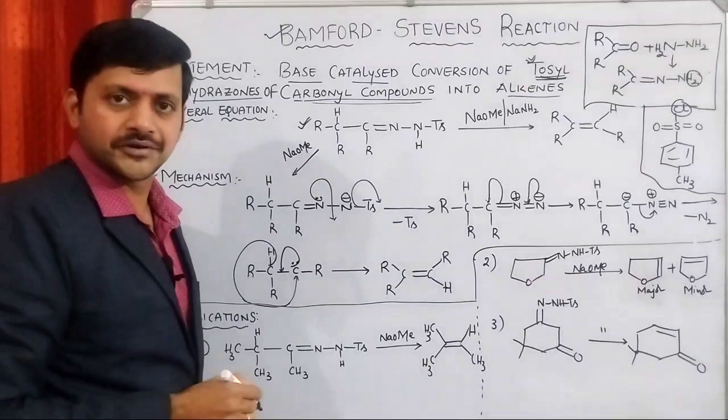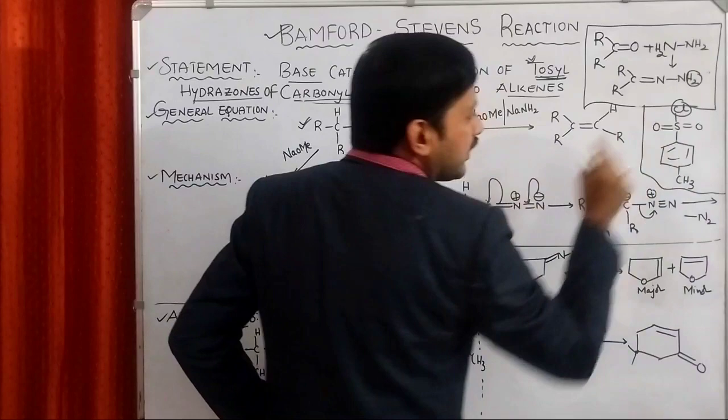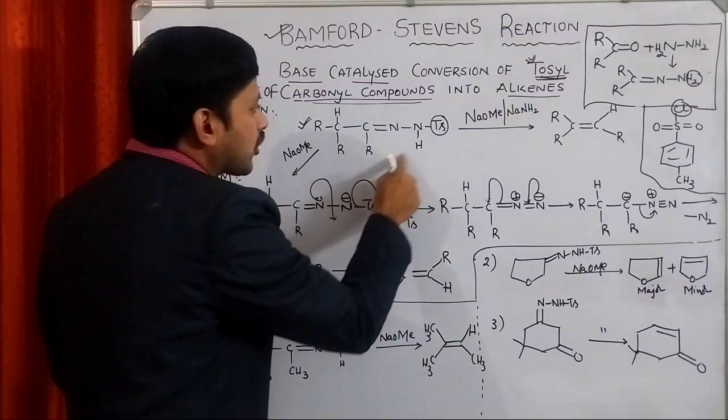So tosyl hydrazone of carbonyl compound is treated with a base. Here the base may be sodium methoxide, sodamide, hydride, or sodium in ethylene glycol. We can use any one of the bases.